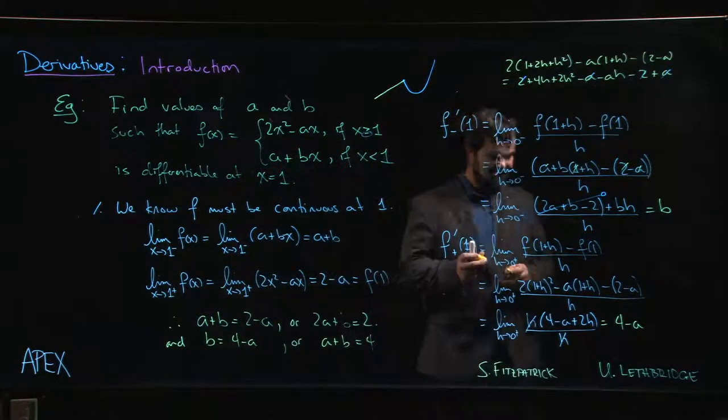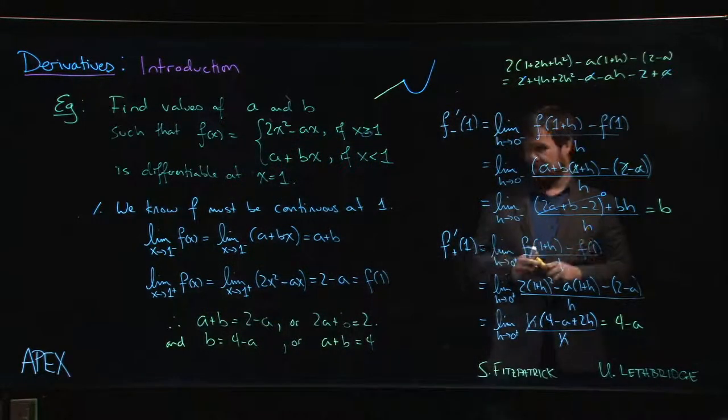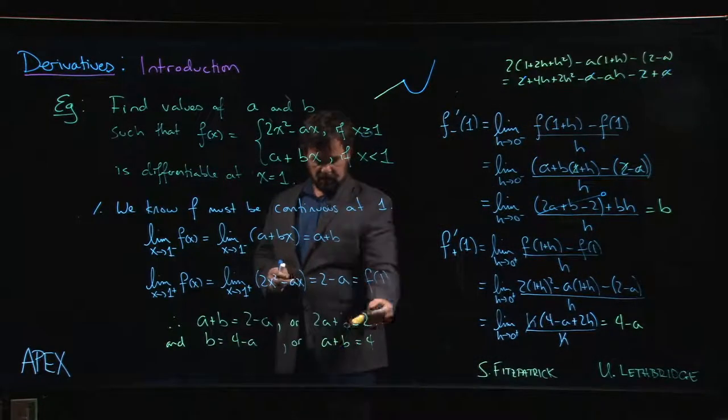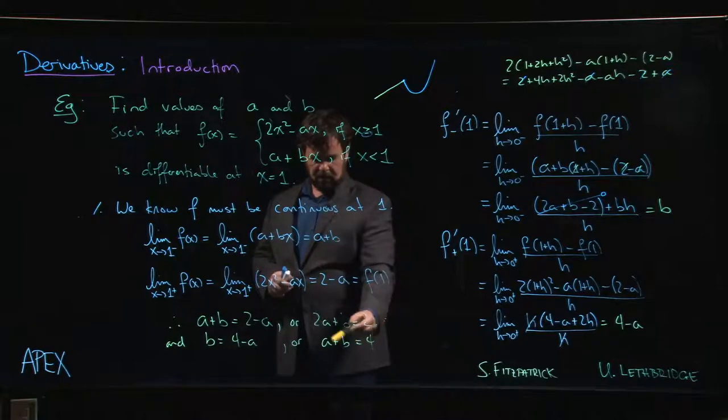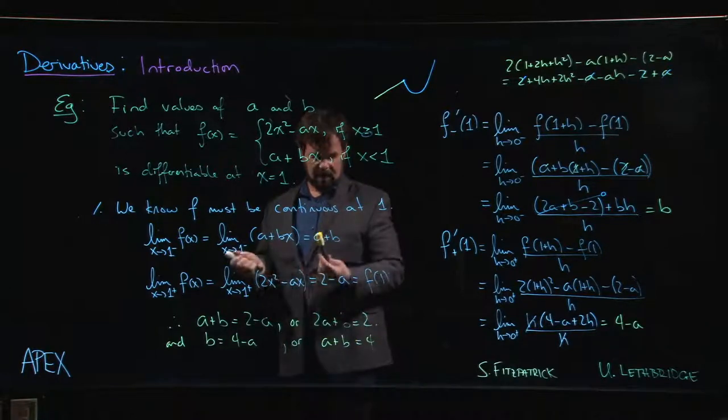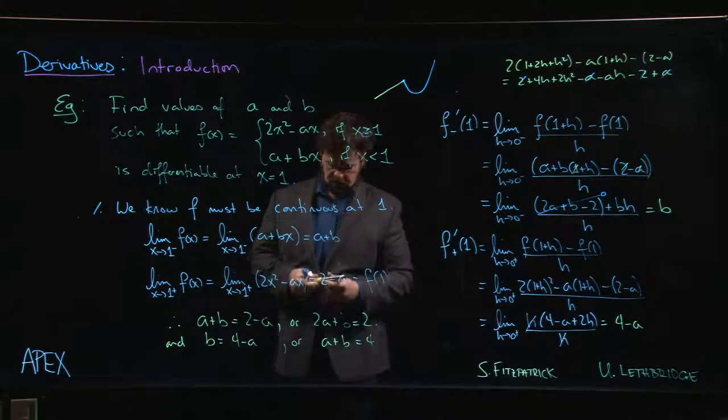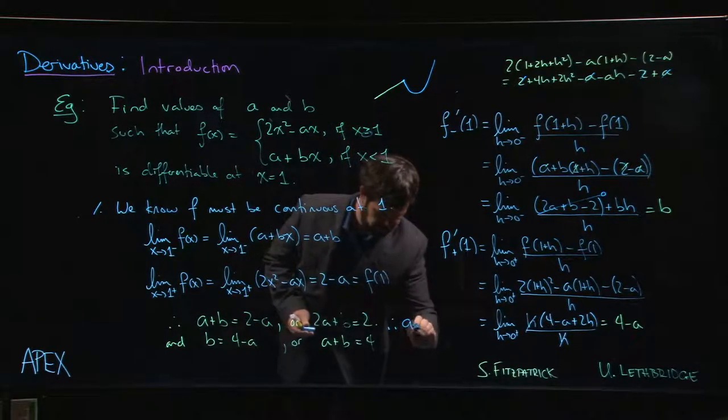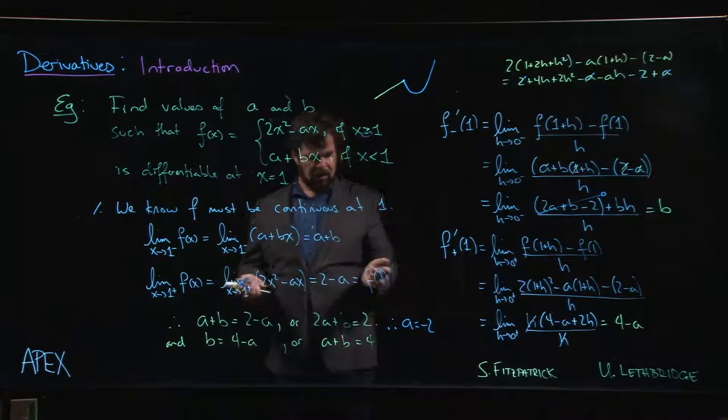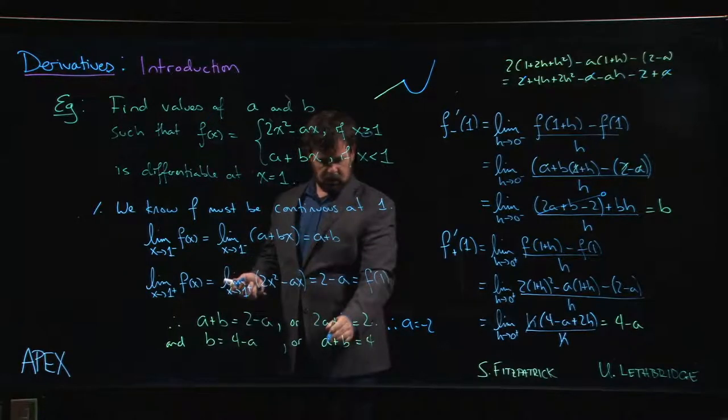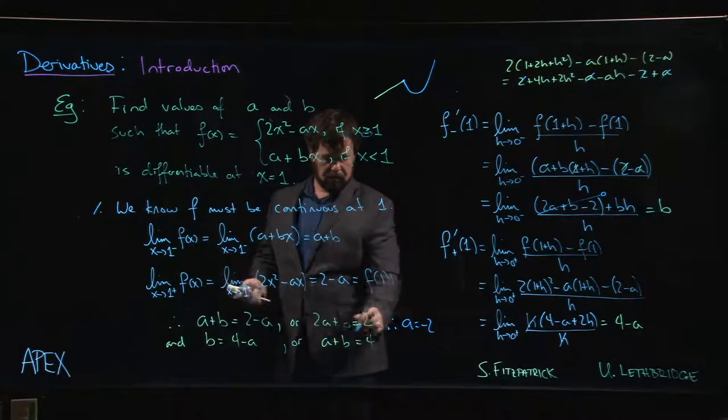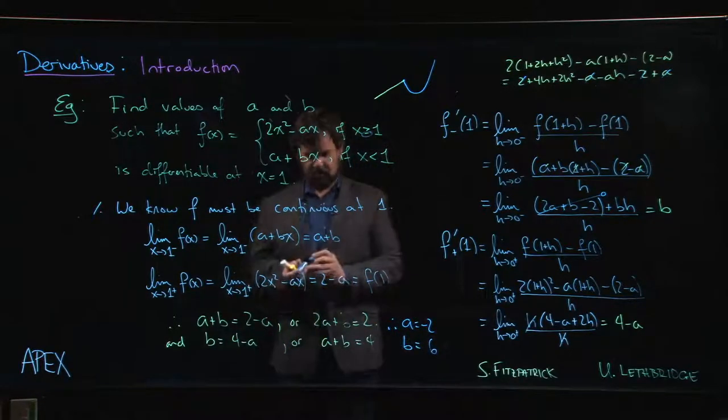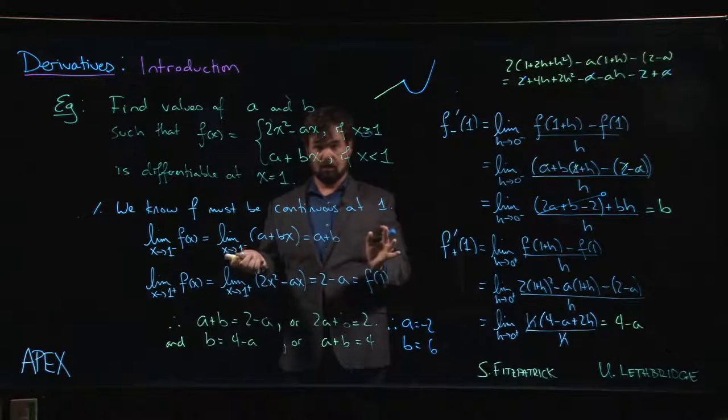Ah, two equations, two unknowns, so we try to sort those out. Not so bad in this case. If we subtract the two equations, b - b is gone, 2a - a is just a, 2 - 4 is -2, so this gives me a is -2. Knowing that a is -2, we can quickly work out that b has to be 6. Okay, so those are the values that will work.